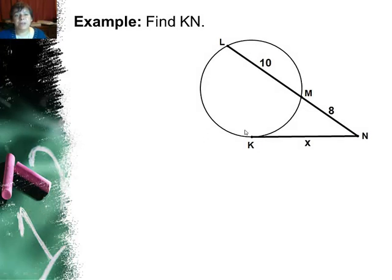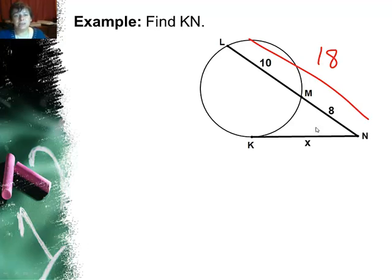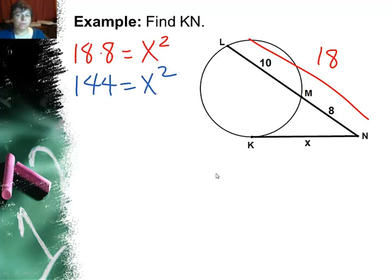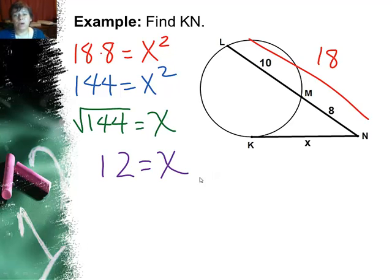In this example, find KN. First find the whole: 10 plus 8 equals 18. So 18 times 8 equals x squared. Multiplying out gives 144 equals x squared. Taking the square root of both sides gives x equals 12, and that is KN. These problems are straightforward — most of the time you won't encounter a complex distribution step.